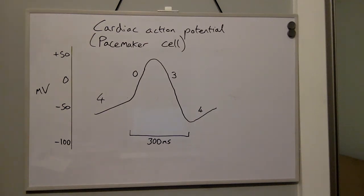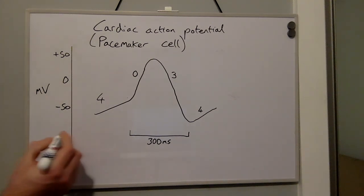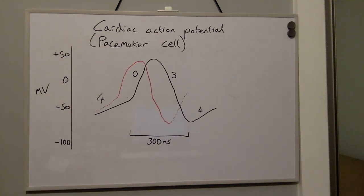However, when there is overriding sympathetic stimulation, the gradient of phase four increases. This happens because when beta-1 adrenoreceptors within the heart are activated, this results in an increase in cyclic AMP, allowing the opening of more calcium channels.